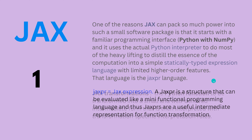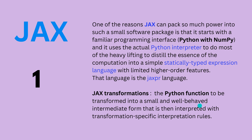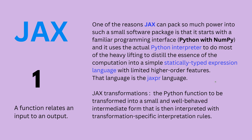So we go now with function transformation. We have Python functions and applying JAX — please think about JAX as JAX transformation, these two words go together. JAX transformation on a Python function produces a small, well-behaved intermediate form that is then interpreted with transformation-specific interpretation rules. So JAX is a beautiful functional approach — a function relates an input to an output: y equals f of x.